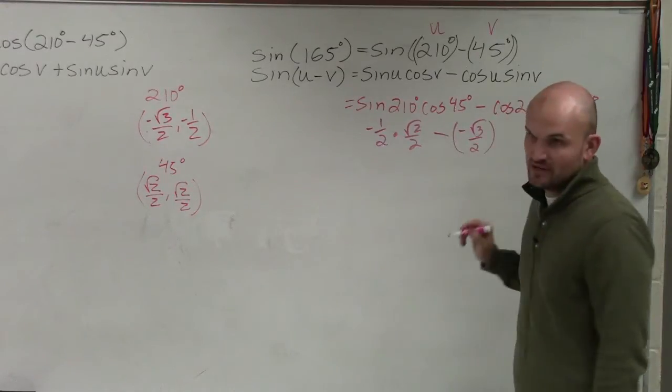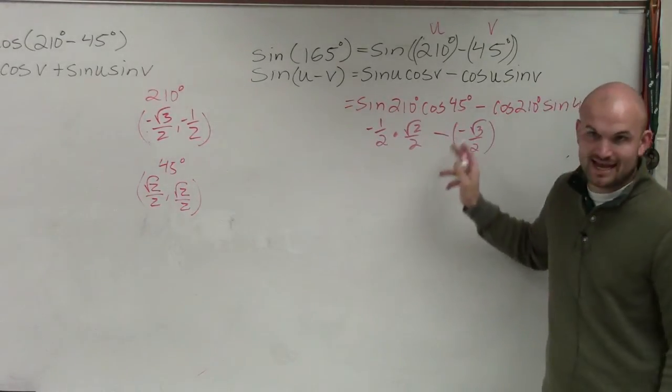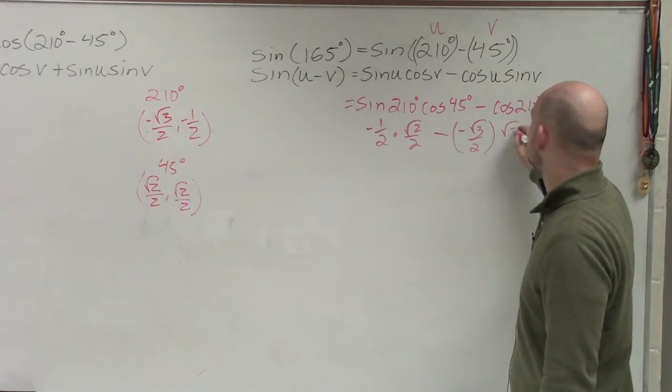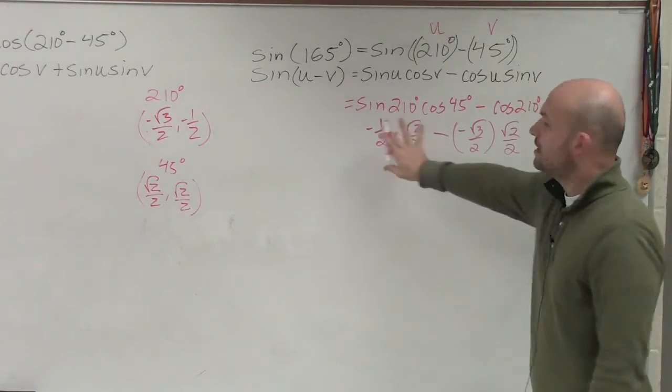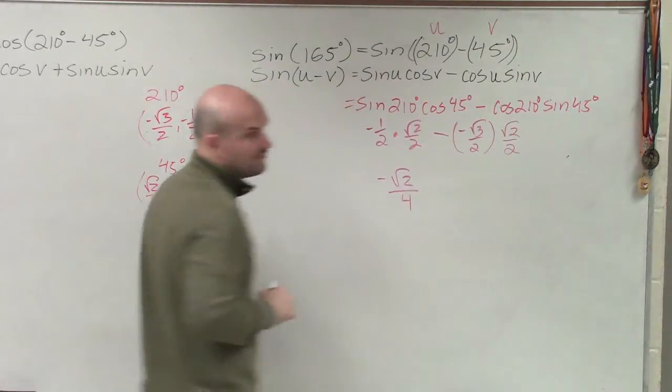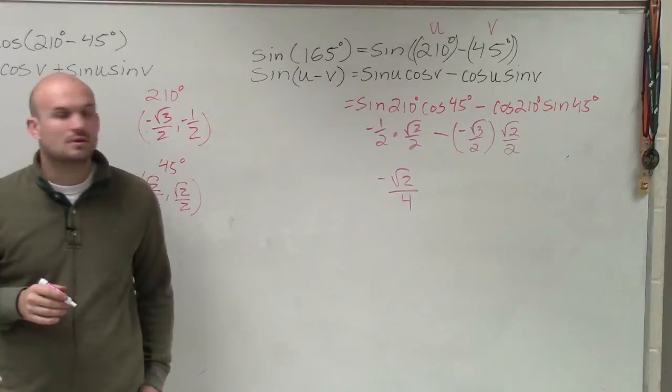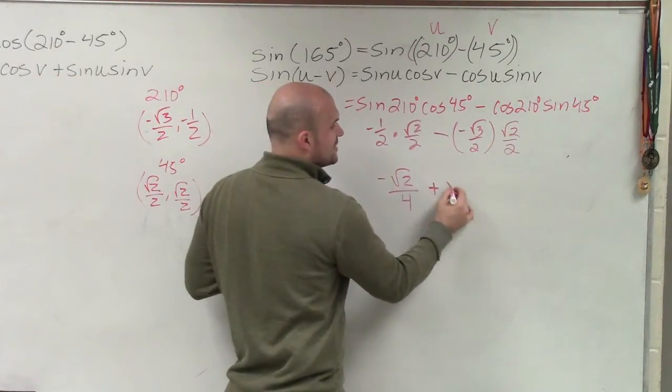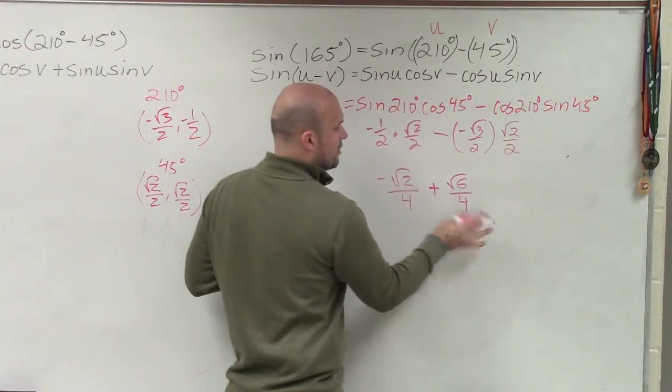Minus the cosine of 210 degrees is going to be a negative square root of 3 over 2. You might want to put those in parentheses to notice that you're subtracting a negative square root of 3 over 2 times the sine of 45 degrees, which is square root of 2 over 2. I can multiply these across, which is negative square root of 2 over 4. And then I can multiply these.